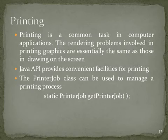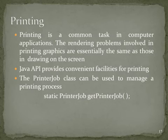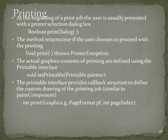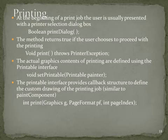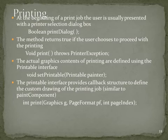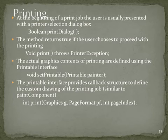At the beginning of a print job, the user is usually presented with a printer selection dialog box. You can do that by invoking the method on the PrinterJob. The method returns true if the user chooses to proceed with printing. The actual graphics content of printing is defined using the Printable interface. An object implementing Printable is assigned to a PrinterJob through the method setPrintable(painter).